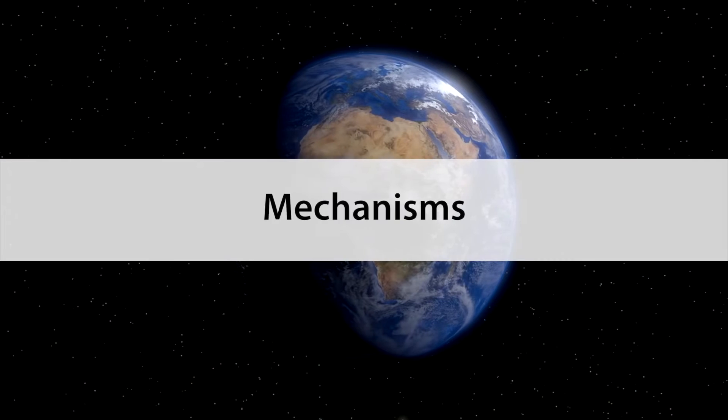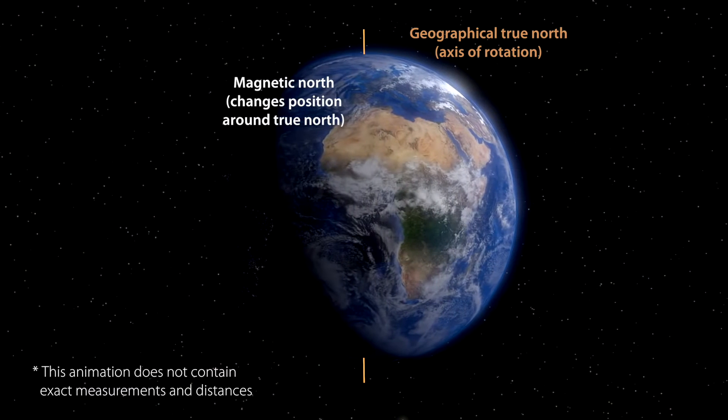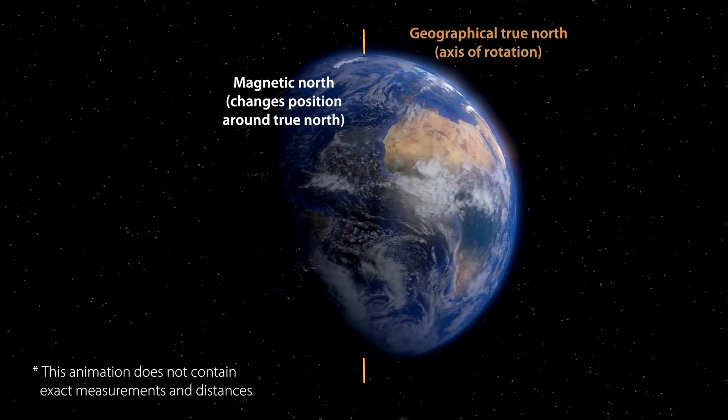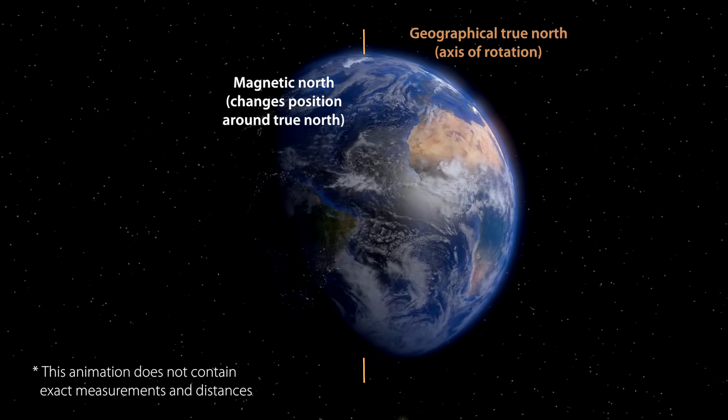Although a magnetic compass points at the Earth's magnetic north, a gyro compass spins to true north. The difference between these two norths can be essential for correct navigation.